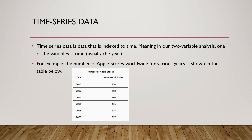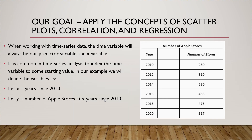So what we have is two variables: a variable for year and a variable for the number of stores. We want to apply all the concepts we've been doing to these two variables. When working with time series data, the time variable will always be our predictor variable X. So the X variable, the predictor variable, will always be time.